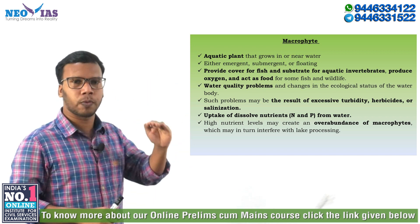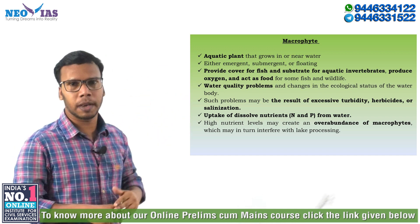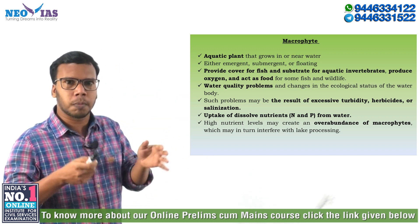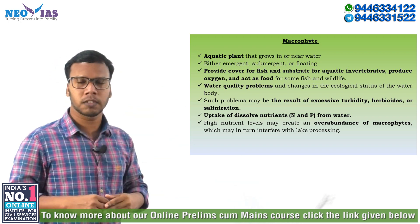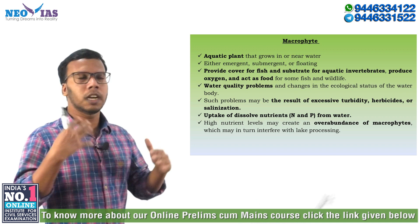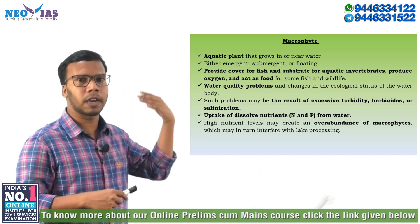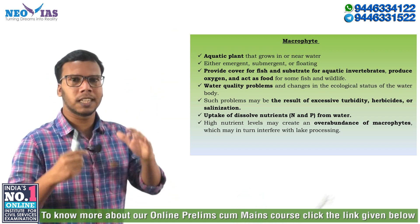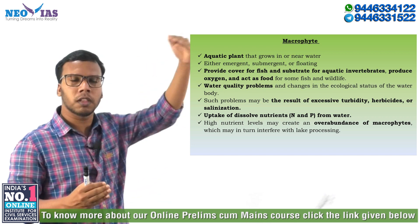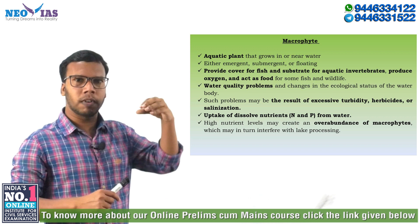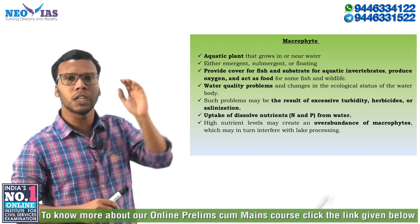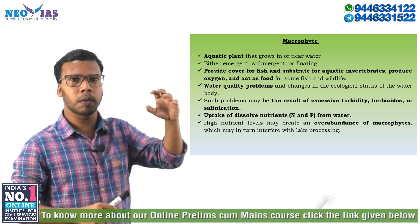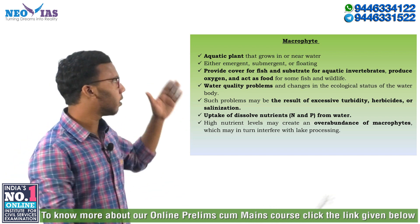Those aquatic plants which are floating on the water are called floating macrophytes. Submergent macrophytes are always present under the water. The third type is the emergent macrophyte — they start from the bed of the lake and grow towards the atmosphere, so we can see the top of the plant above the water surface.